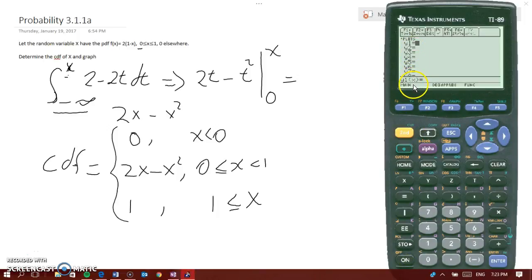I already have it set up into Y, and then I'm going to type in the 2X minus X squared. So 2X minus X to the power of 2.